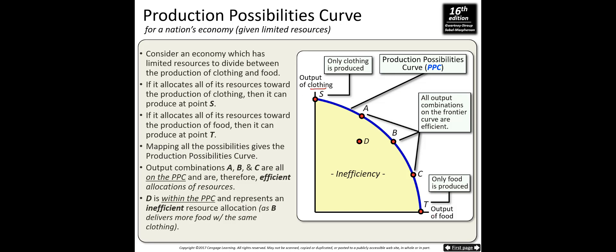Now consider an economy that produces two goods: clothes and food. The economy has limited resources. If you use all resources efficiently, you can choose to produce any combination of clothes and food on the curve. Point S uses all resources for clothes and no food; point A uses most resources for clothing and some for food; moving along the curve shifts resources toward food production.